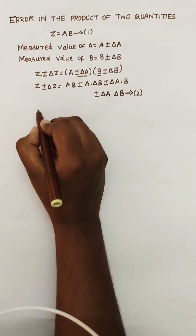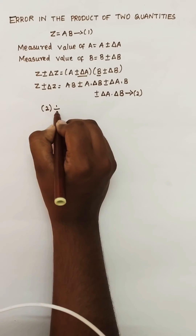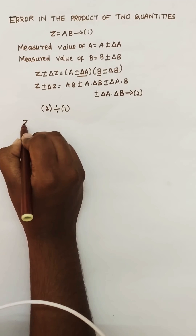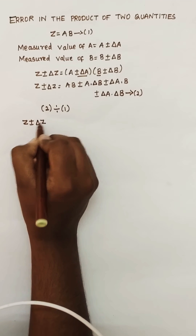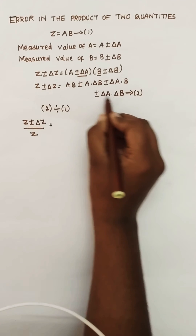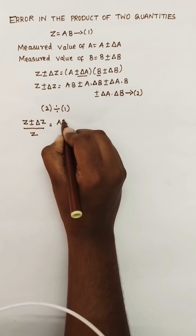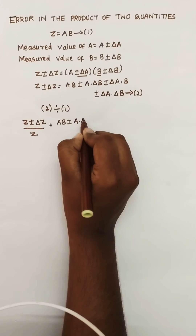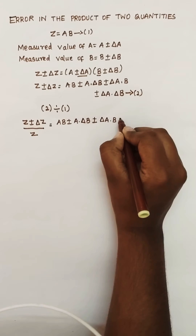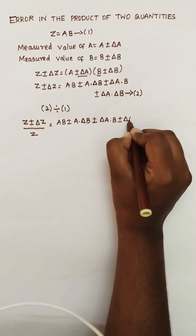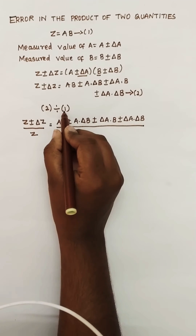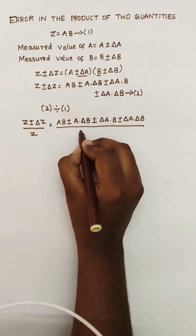Now I am going to divide equation 2 by equation 1. Equation 2 left-hand side is z plus or minus delta z, and equation 1 left-hand side is z. Equation 2 right-hand side is ab plus or minus a·delta b, plus or minus delta a·b, plus or minus delta a·delta b, divided by equation 1's right-hand side ab.